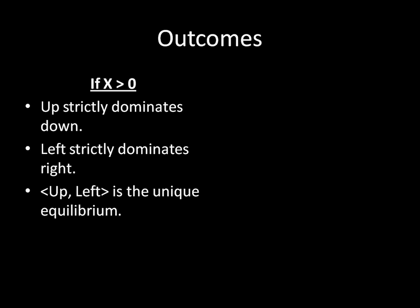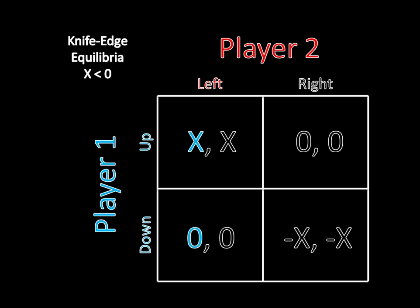Well, now let's see what happens on the other side of things. Suppose x is less than zero. Well, if that's the case, now x is a negative number. So if player 2 is going left, that means player 1 should want to go down since 0 is greater than x. Remember, x is negative, so 0 is greater than a negative number. Down is better than up for player 1 given that player 2 is going to go left. And if player 2 is going to go right, again, same thing here.